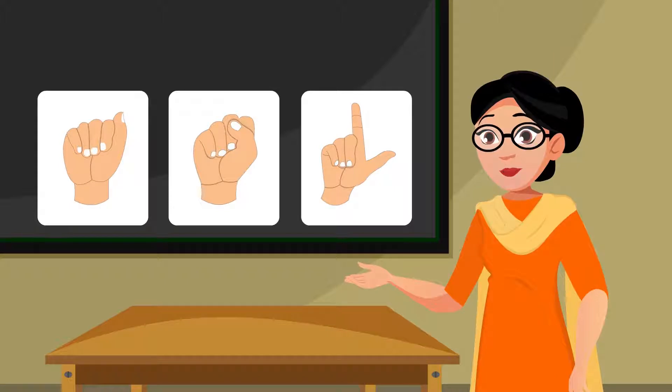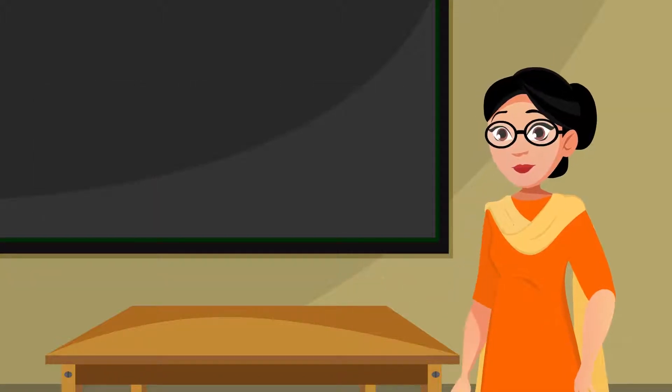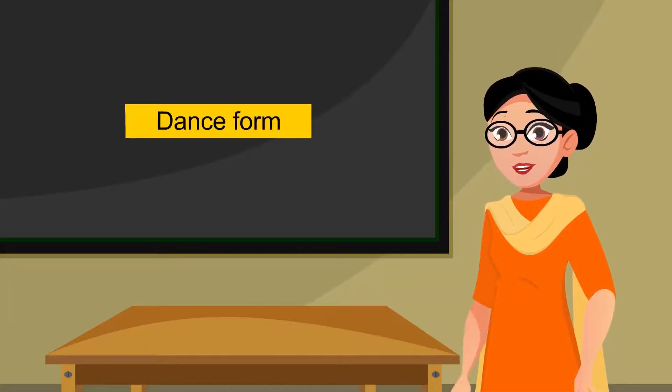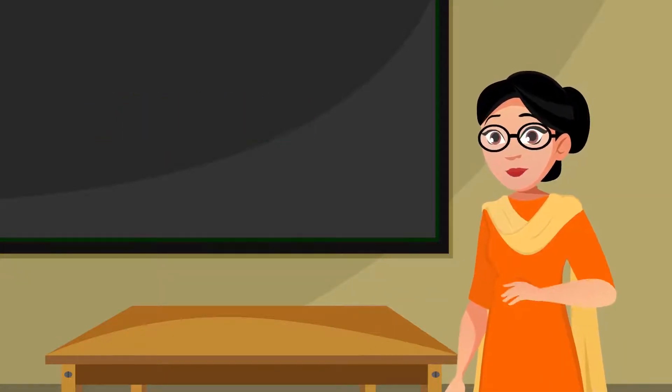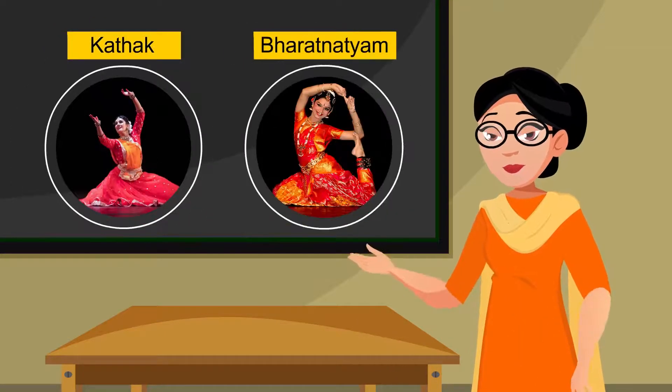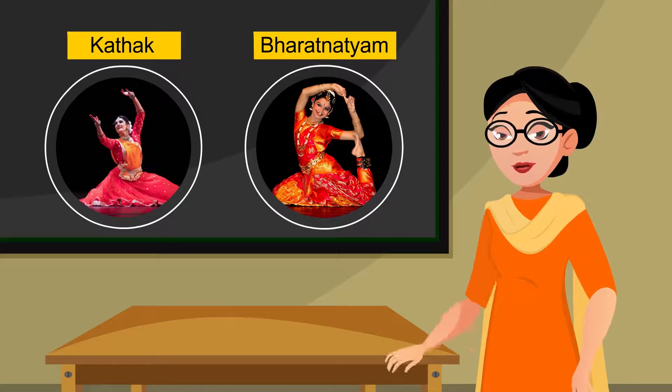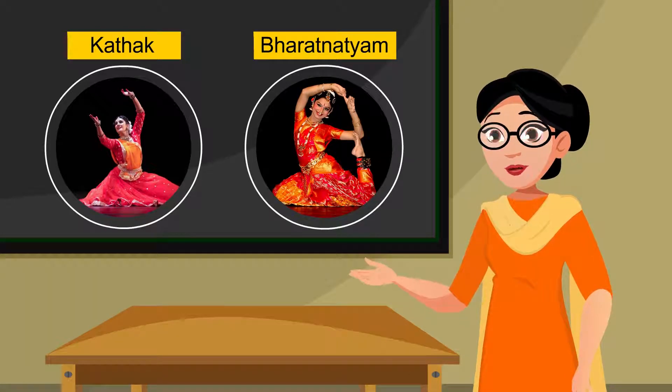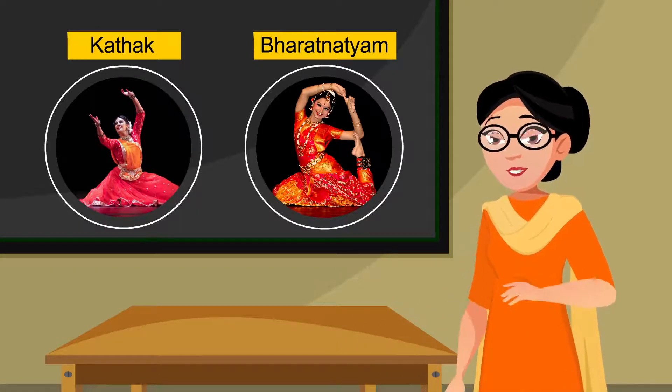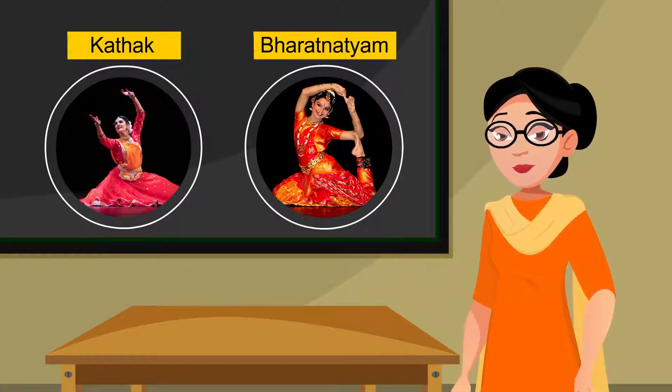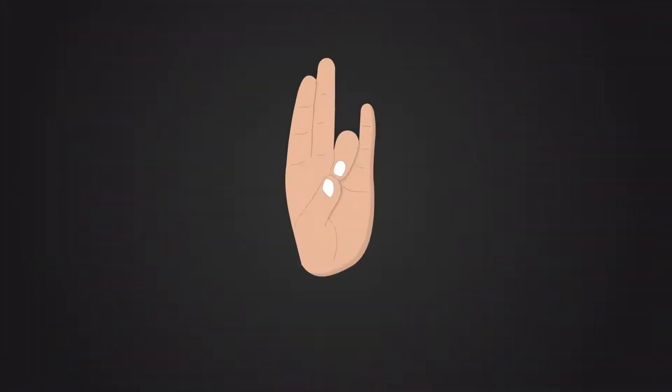There is one more place where hands and expressions, or mudras, are used: in dance. If you've ever seen classical dancers like Kathak or Bharatanatyam, then you would have noticed that the dancers use a variety of mudras to narrate mythological stories. Observe the pictures of a few mudras now. This mudra depicts a peacock, this one a bird, and this one a mouse.